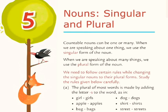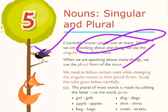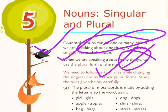Dear students, look at this picture and these sentences. Countable nouns — you know what countable nouns are: jinhe hum ginn sakte hain, unhe hum countable nouns kehte hain — countable nouns can be one or many. When we are speaking about one thing, we use the singular form, and when we are speaking about many things, we use the plural form of the noun. Jab ek cheez ki baat karenge, singular hoga; aur jab bahut sari cheezon ki baat karenge, plural hoga.